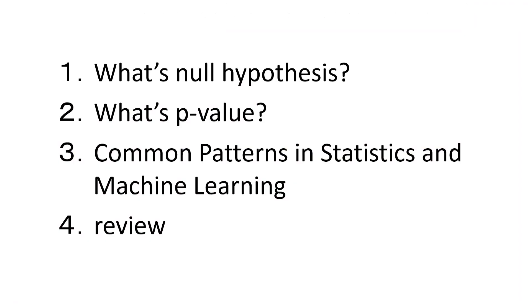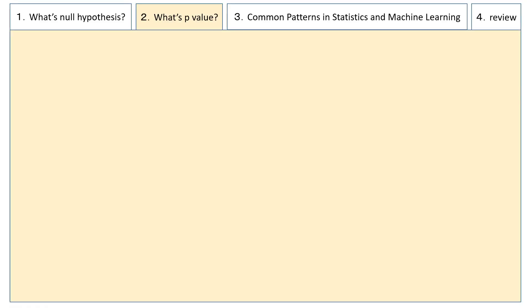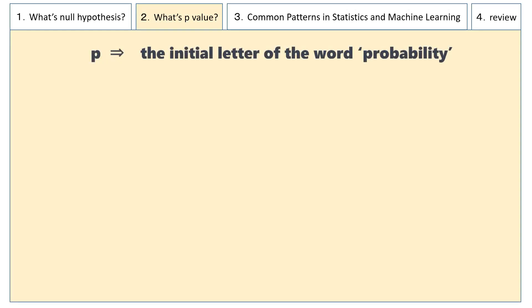Next, I will explain what p-values are. First of all, what does the "p" in p-value stand for? The p stands for probability, which is the initial letter of the word. In other words, p-value refers to probability.